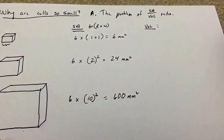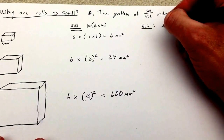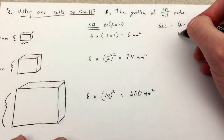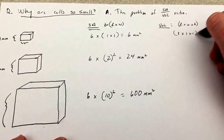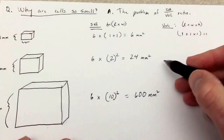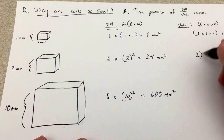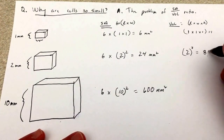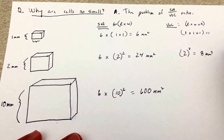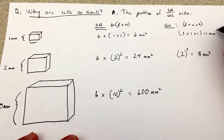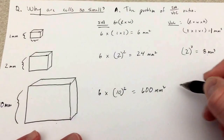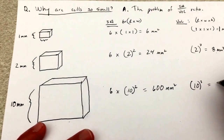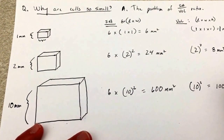So we're not done — let's also figure out the volume. The volume of a cube is given by the equation length times width times height. For the one millimeter cube, that's one times one times one, which equals one millimeter cubed. For the two millimeter cube, two times two times two — two to the third power — is eight millimeters cubed. And for the large cube, ten times ten times ten, ten cubed, equals 1,000 millimeters cubed.